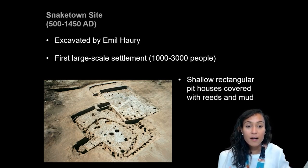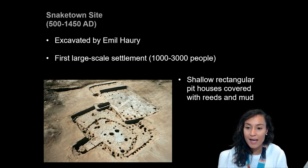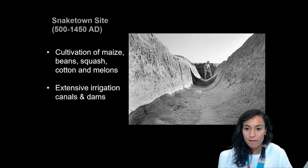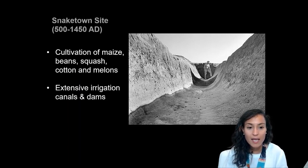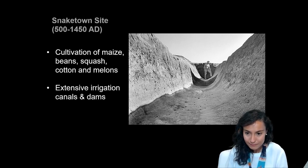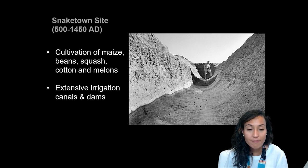Pit houses are shallow and rectangular depressions in the earth, constructed of logs and then covered in reeds, saplings, and mud. In the image next to me, what you're seeing is the outline of those pit houses — you can see all these round holes where you would have had a wooden post for the roofing. Hohokam subsistence was based on maize, beans, squash, and melon production, but people also grew cotton for clothing and textile weaving. The people living at these Hohokam sites planted their crops to coincide with semi-annual rainfall and flooding patterns.